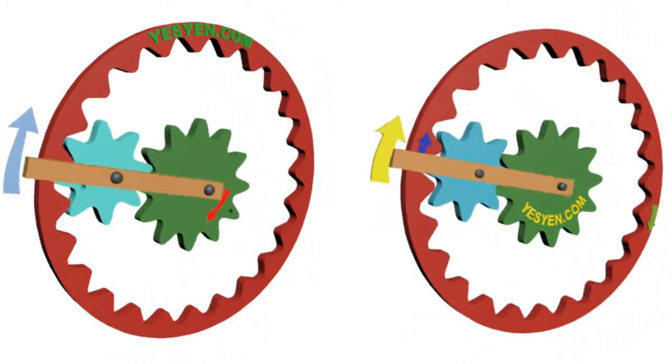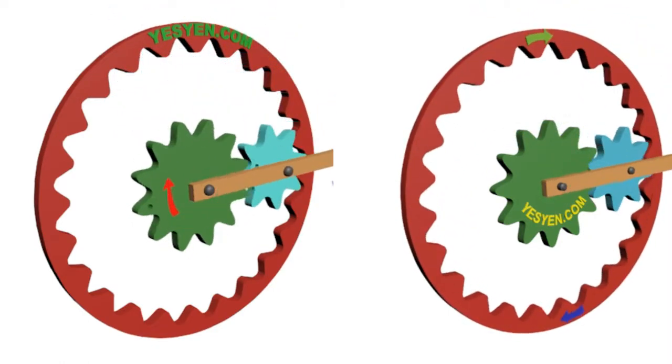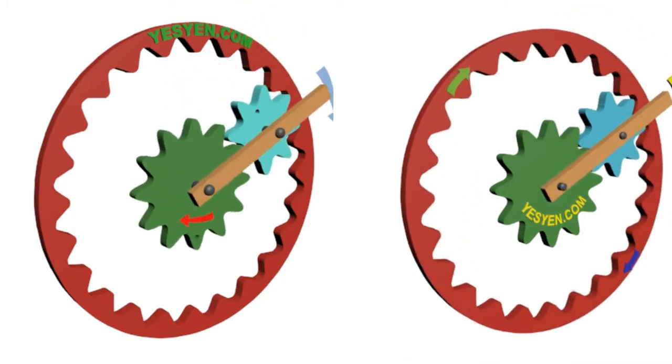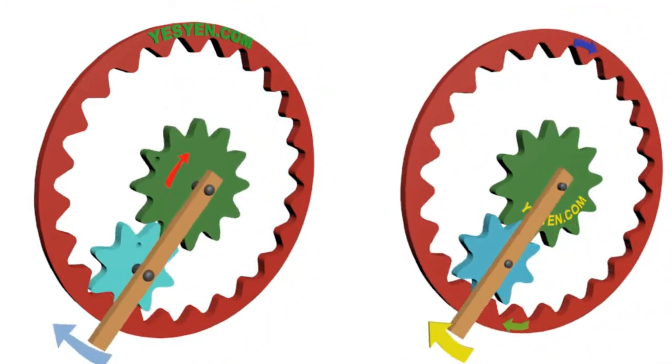Scenario 1: Spur wheel A being stationary. Scenario 2: Annular wheel C being stationary.